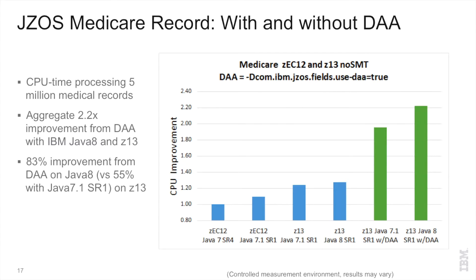We see a transparent 83% improvement purely from Data Access Accelerator — a significant improvement. If you're already leveraging the JSOS APIs, there's nothing you need to change from your application perspective, as Data Access Accelerator is already enabled by default. If you're developing new Java applications that access packed decimal data, take a look at the Data Access APIs — they're supported as part of Java 7.1 and later.